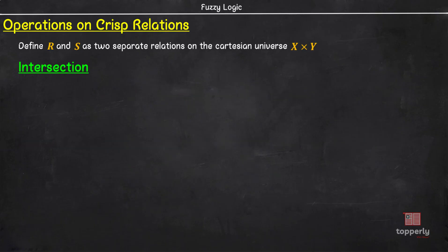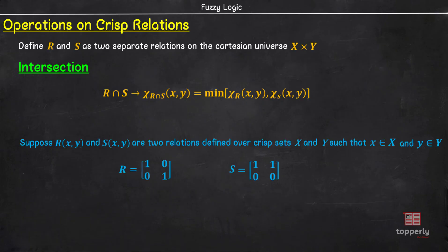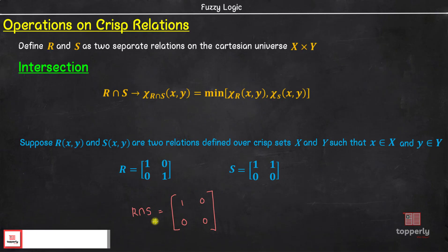Now let's see the intersection operation. The membership value of each ordered pair in R intersection S is given by minimum of Chi_R(X, Y) and Chi_S(X, Y). Considering the same relations R and S as before, R intersection S is given by minimum of 1 and 1 which is 1, minimum of 0 and 1 which is 0, minimum of 0 and 0 which is 0, and minimum of 1 and 0 which is 0. So, this is the matrix for R intersection S.